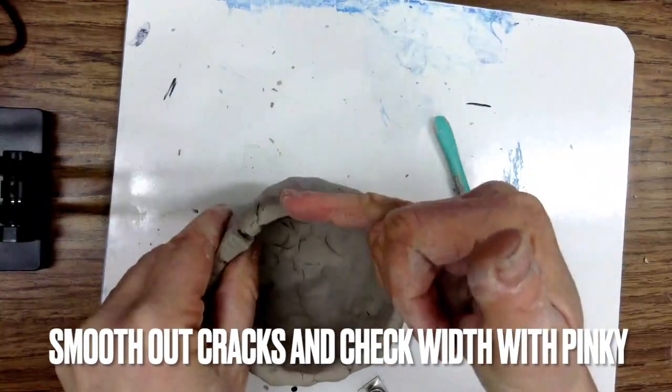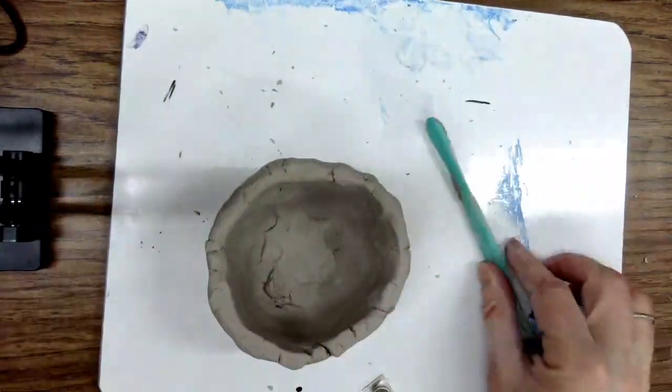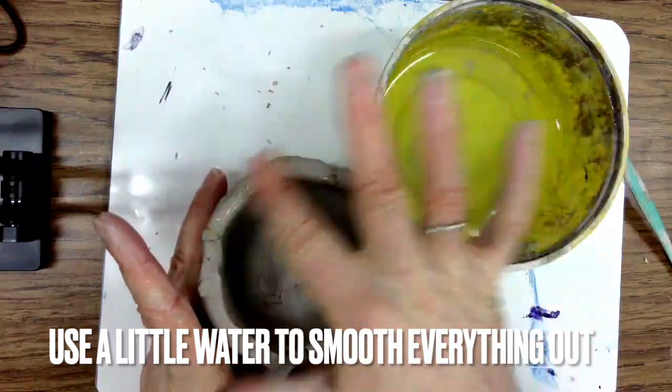You can flip it over and gently drop it to flatten the top out a bit. Keep checking the width with your pinky.